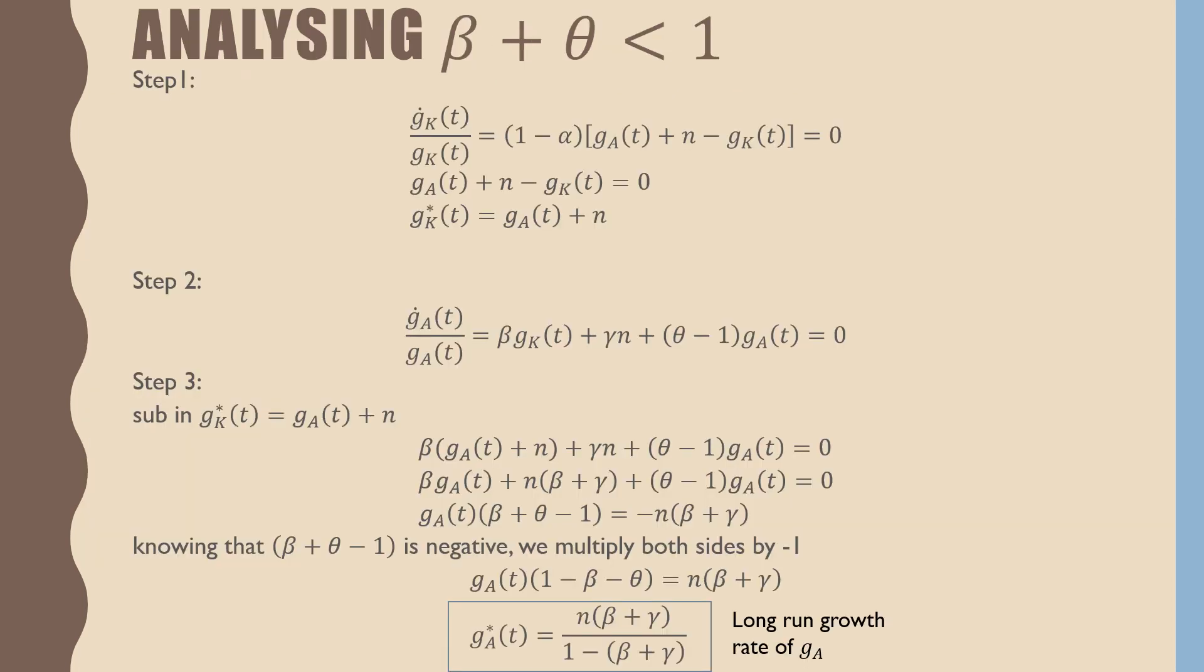For this last slide, I'm going to talk about our case number one, where beta plus theta is less than one. There's a ton of math here, and you're probably going to pause it, but I'm just going to make a couple of notes. For step number one, we're going to start with our growth rate transition equation for capital stock, and we're going to set that equal to zero and solve for G of K star.